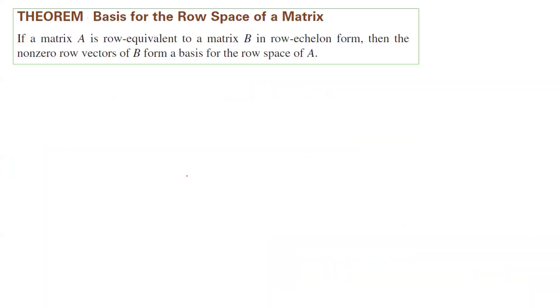Take a look at this theorem: basis for the row space of a matrix. If matrix A is row equivalent to matrix B in row echelon form, then the non-zero row vectors of B, so again, make sure you have the non-zero row vectors of matrix B form a basis for the row space of the very first matrix, matrix A.